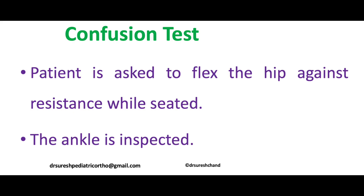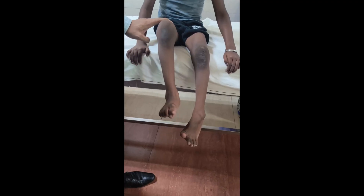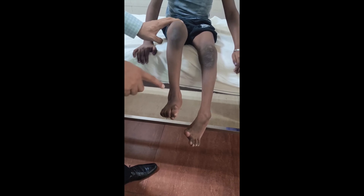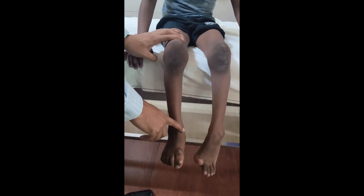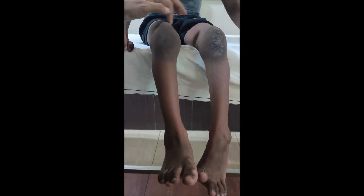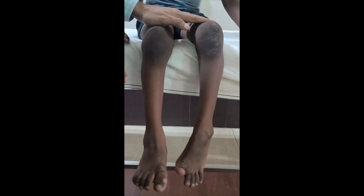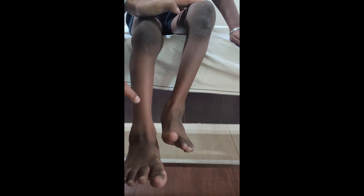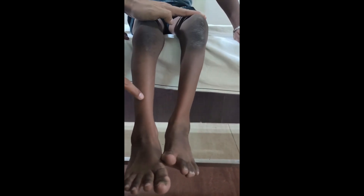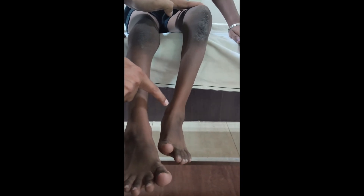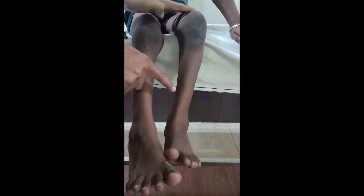In the confusion test, the patient is sitting on the edge of the examination couch with hip and knee flexed and legs hanging. We ask the child to flex the hips against the resistance of our hand, with the hand positioned over the anterior aspect of the distal thigh, and we notice the position of the ankle.